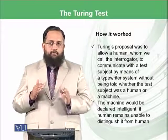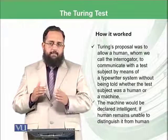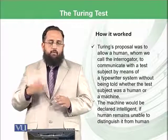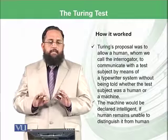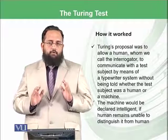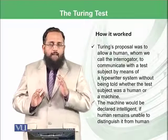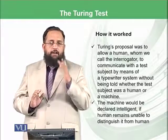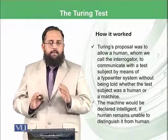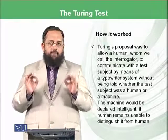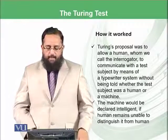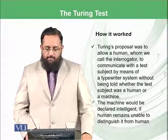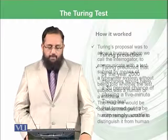Sometimes there is a human, sometimes there is an intelligent agent. If the actual human who is typing the commands remains unable to distinguish when there was a human and when there was a machine or intelligent agent, this means that you have made a perfect or accurate AI system. The machines would be declared intelligent if humans remain unable to distinguish them from humans.